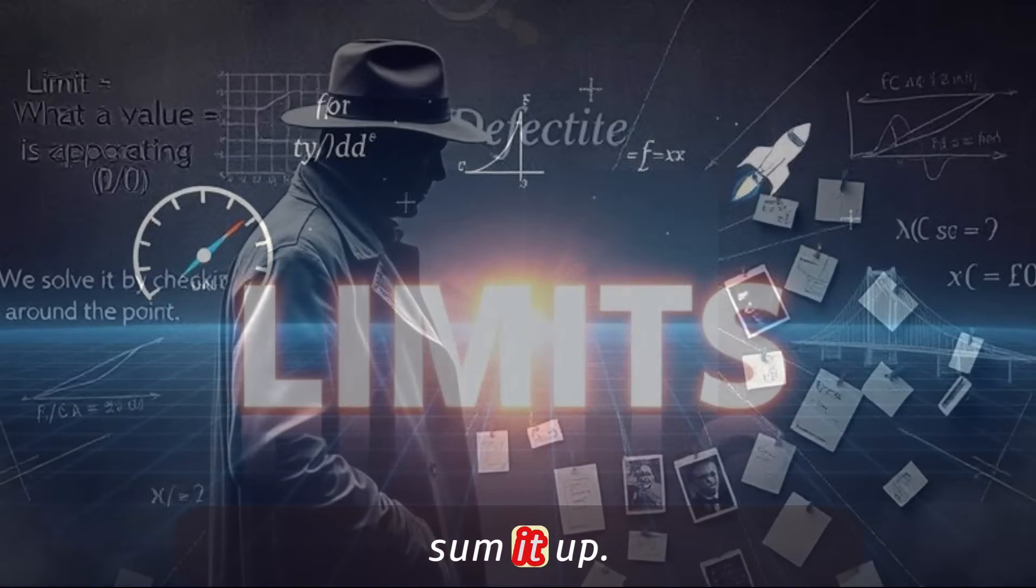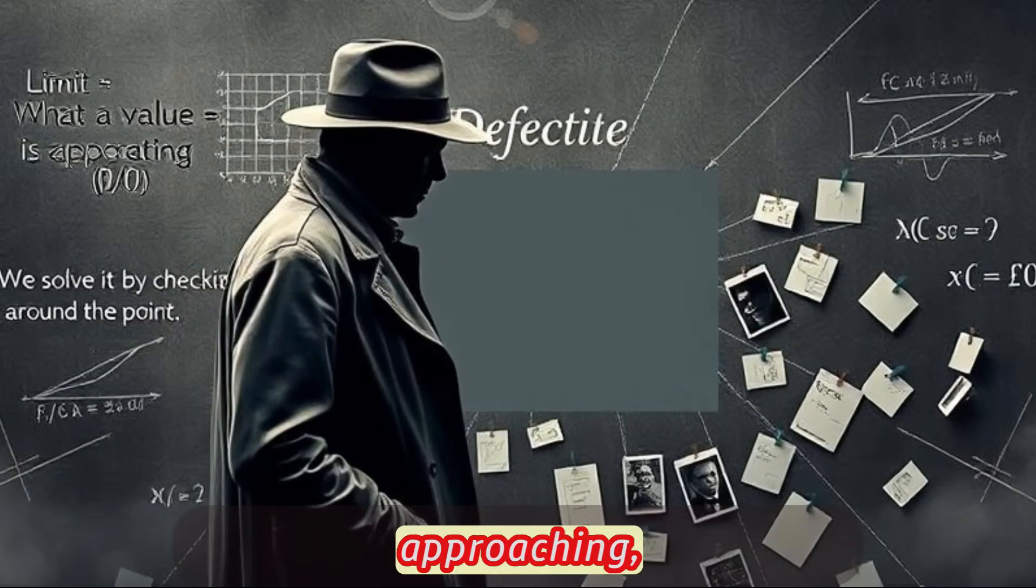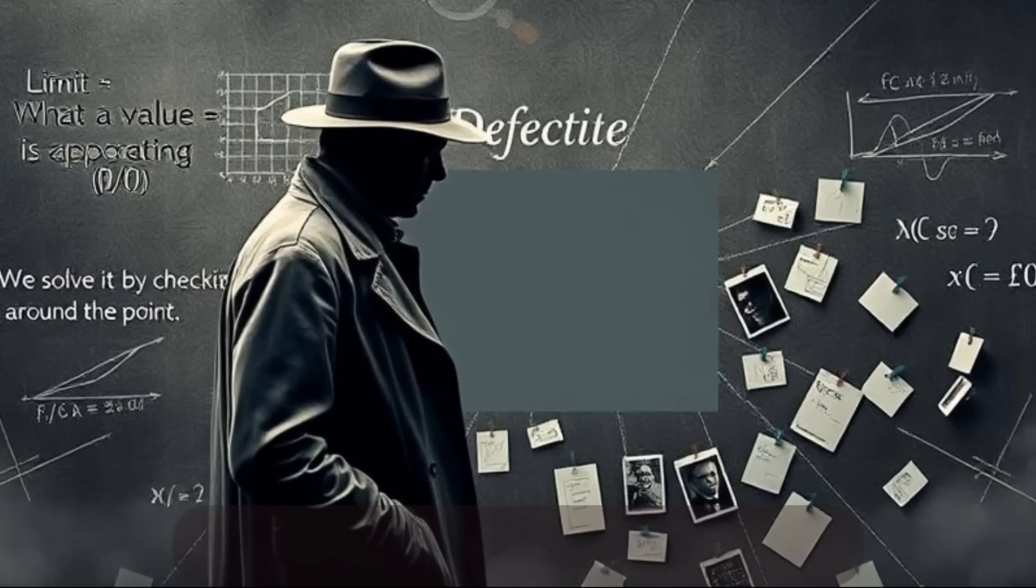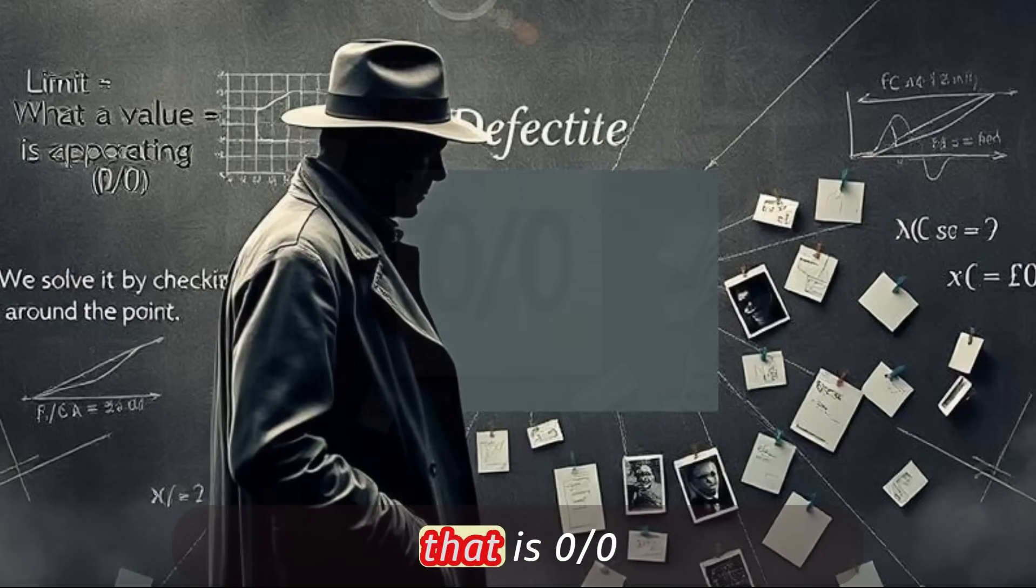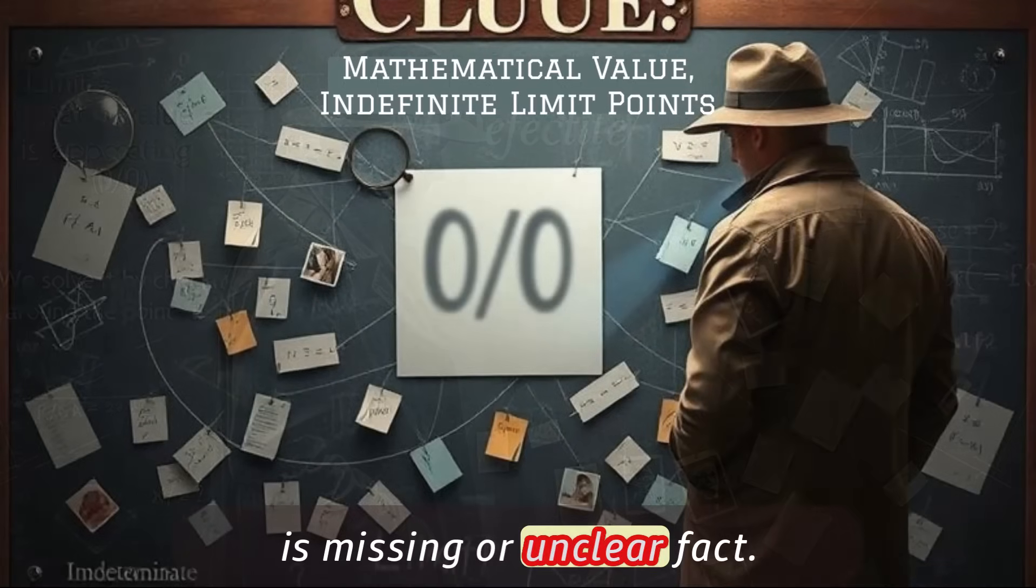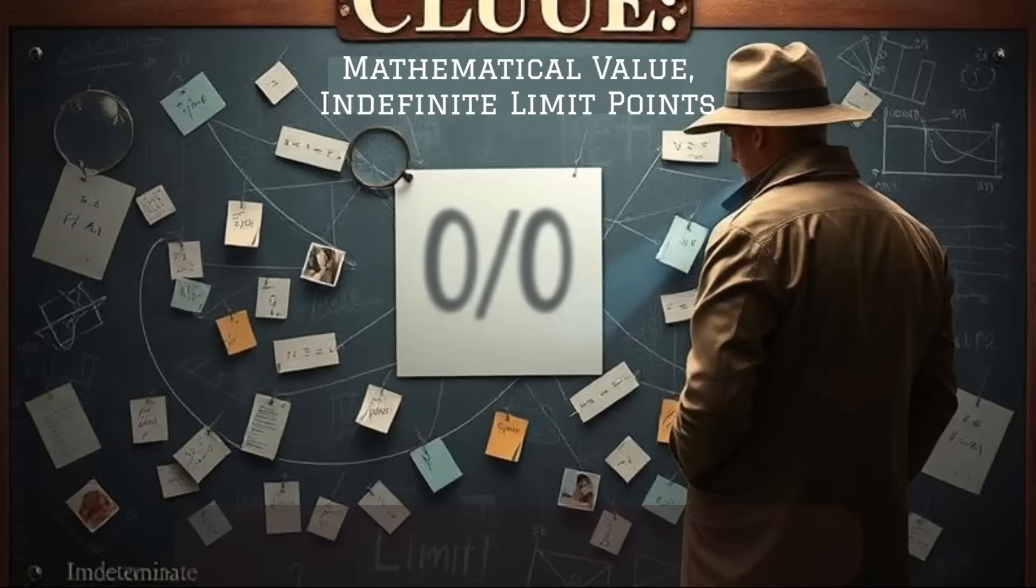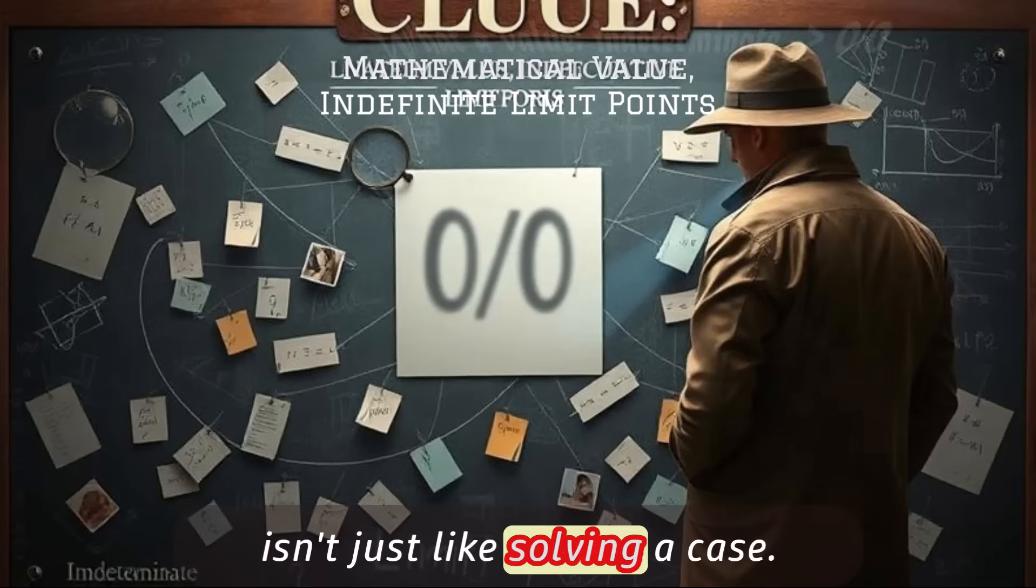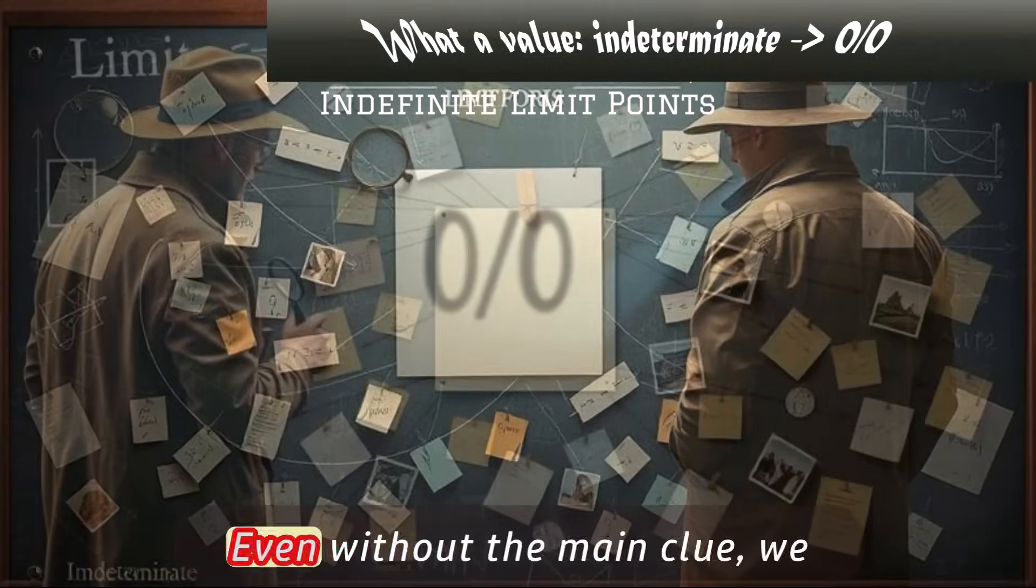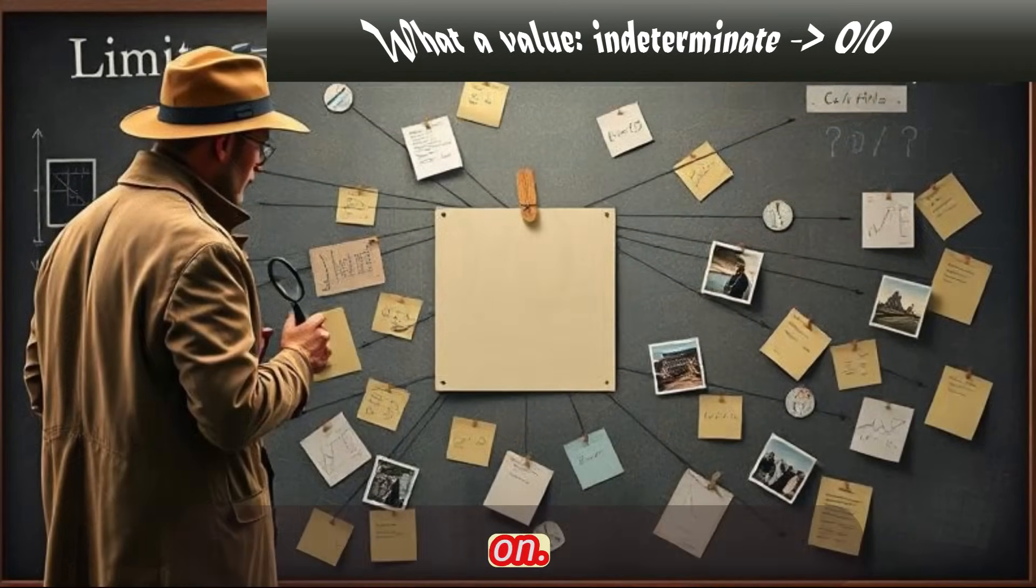Let's sum it up. Limit is what a value is approaching. Indeterminate, i.e. 0/0, is a missing or unclear fact. Limit solves the puzzle by checking values around the point. It's just like solving a case. Even without the main clue, we piece together what's really going on.